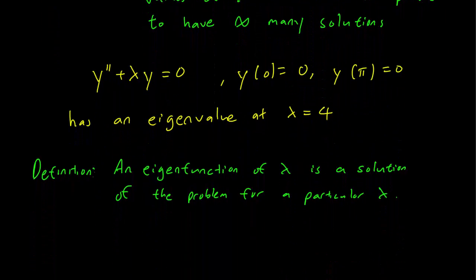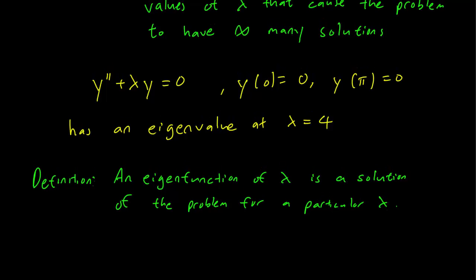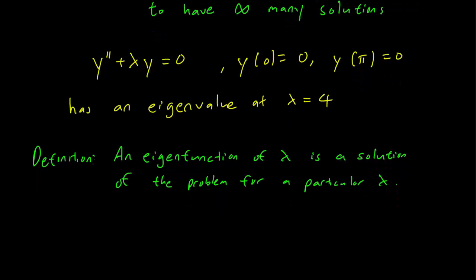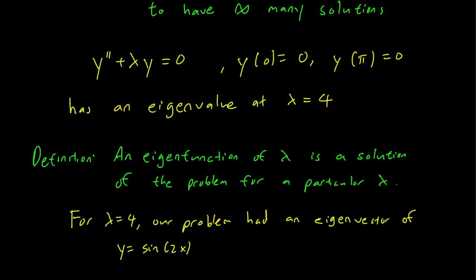Secondly, we say that the problem has an eigenfunction if it's a solution of the problem for a particular lambda. As an example, for λ = 4, our problem had an eigenvector of y = sin(2x). You may recall that we've determined that y = c₂sin(2x) is a solution for any c₂. So I just pick c₂ = 1 here.